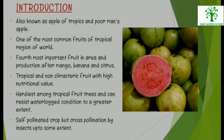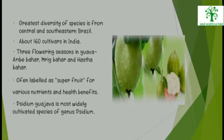Guava is the hardest among tropical fruit trees and can resist waterlogged conditions to a greater extent. It is a self-pollinated crop but cross-pollination by insects does occur to some extent. Greatest diversity of species is from Central and Southeastern Brazil. There are about 160 cultivars in India. Three flowering seasons in Guava are Amwe Bahar, Mrig Bahar, and Hast Bahar. It is often labeled as a super fruit for its various nutrients and health benefits.